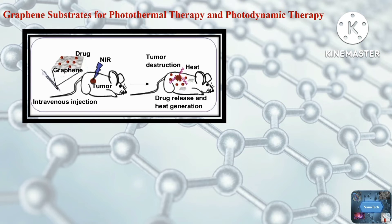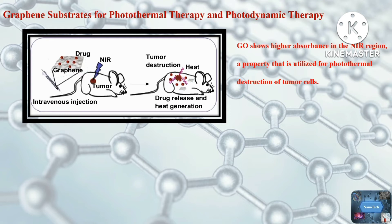A number of nanomaterials with NIR absorbance are highly recommended for photothermal therapy to avoid interference from biological tissues. Graphene oxide also provides effective photothermal therapy in vivo because of its high surface area and NIR absorbance. Due to its high surface area, it has efficient drug loading capacity and allows conjugation of ligand molecules to achieve targeted and enhanced therapeutic potential.